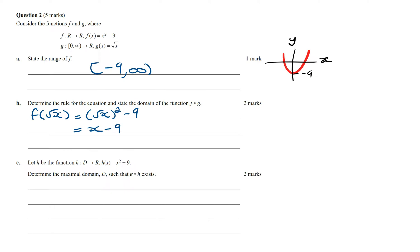Now the domain of f of g of x is going to equal the domain of the inner function. The inner function is g of x, and we're told that its domain is from 0 to infinity, and so therefore the domain is going to be x values from 0 to infinity, where 0 is inclusive.